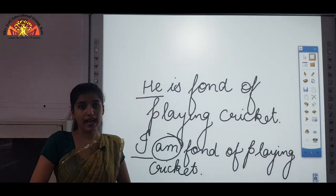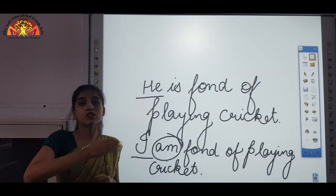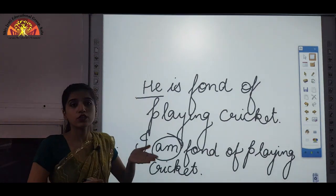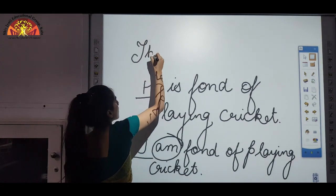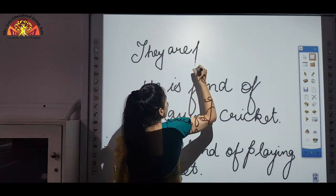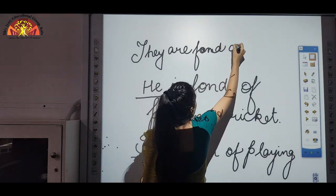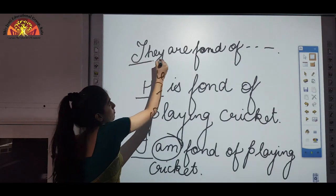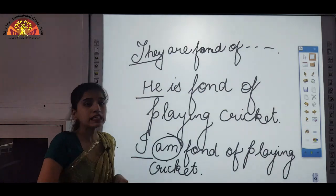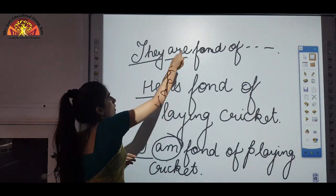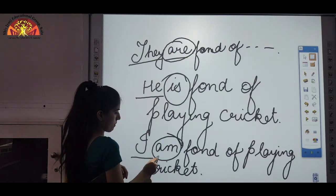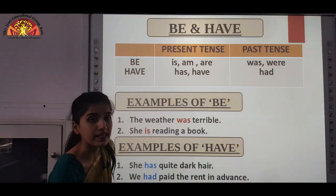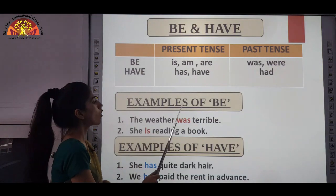If the subject is plural — we or they — then we use 'are.' For example: 'They are fond of playing cricket.' The subject is plural, so we use 'are.' Remember, is, am, and are are all be forms of the verb.